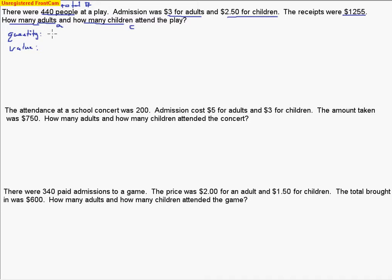From there we can set up a quantity equation: the number of adults plus the number of children equals the total number that ended up showing up, which was 440 people. Now the value equation — we do the same sort of thing as with the coin problem, but instead of a value of a coin, we have a value of an adult ticket. So $3 times the number of adults who showed up, plus $2.50 for the number of children who showed up, equals the total receipts of $1,255.